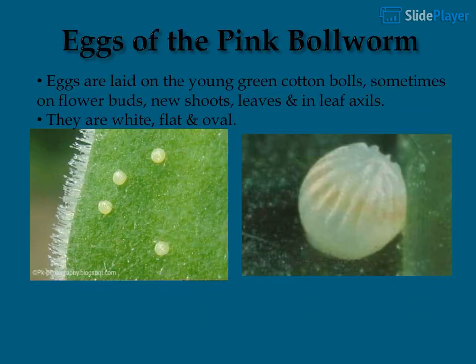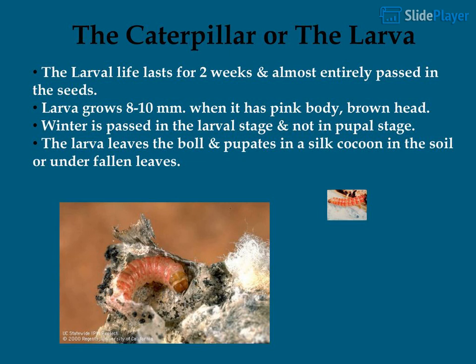Eggs of the Pink Boll Worm are laid on the young green cotton balls, sometimes on flower buds, new shoots, leaves, and in leaf axils. They are white, flat, and oval.